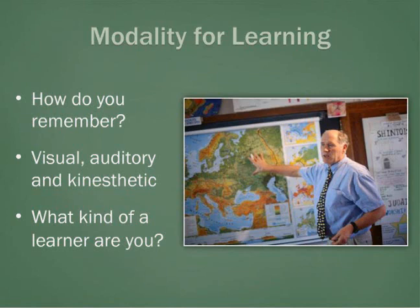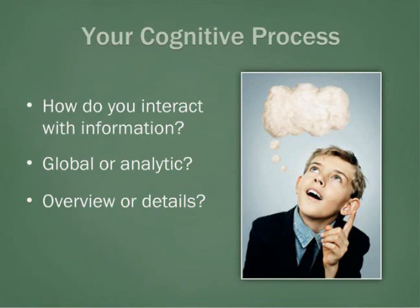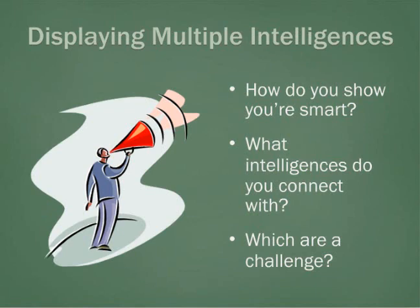Rating your cognitive process — or how do you interact with information — is the next consideration. There are two considerations: global and analytic. Reflect on how you give directions. Do you give very specific details, or do you tend to give more of an overview? This would be a strong indicator of which characteristics best describe you for your cognitive process.